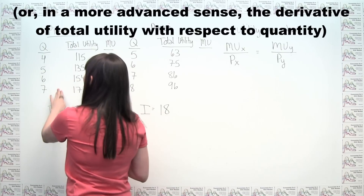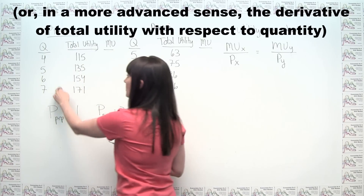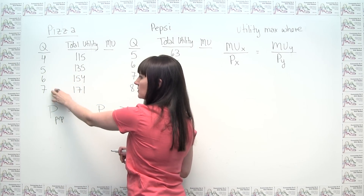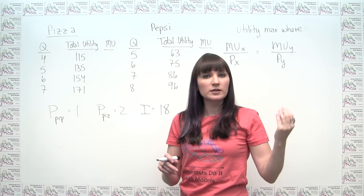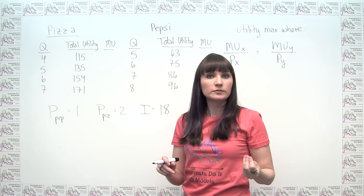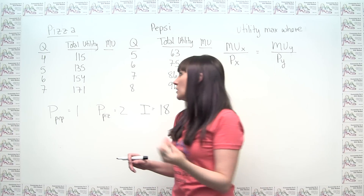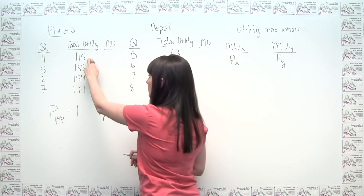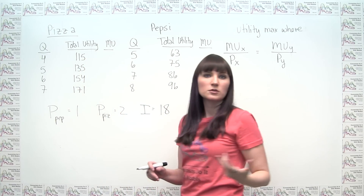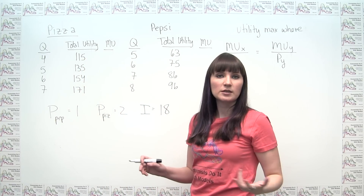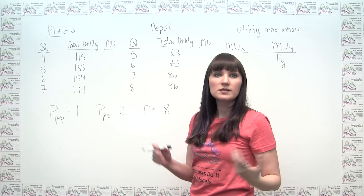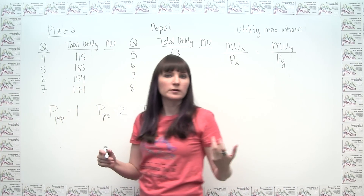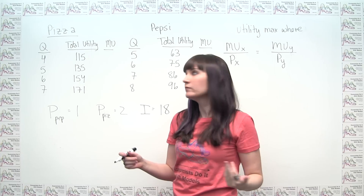We notice that our change in quantity is always 1 — going from 4 to 5, 5 to 6, 6 to 7. So marginal utility is just going to be the differences between these total utility numbers. That's not always going to be the case if we weren't incrementing by one, but it happens to be here. So our job is pretty easy.